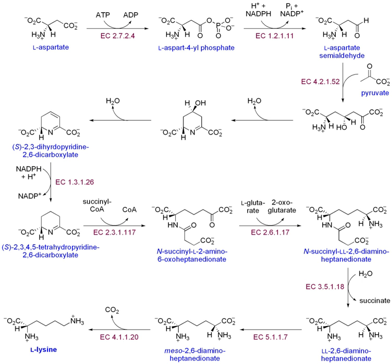The serine family of amino acids includes serine, cysteine, and glycine. Most microorganisms and plants obtain the sulfur for synthesizing methionine from the amino acid cysteine. The conversion of serine to glycine provides the carbons needed for the biosynthesis of methionine and histidine. During serine biosynthesis, phosphoglycerate dehydrogenase catalyzes the initial reaction that oxidizes 3-phospho-D-glycerate to yield 3-phosphonooxypyruvate. Phosphoserine aminotransferase then transfers an amino group from glutamate onto 3-phosphonooxypyruvate to yield L-phosphoserine. The final step is catalyzed by phosphoserine phosphatase, which dephosphorylates L-phosphoserine to yield L-serine.